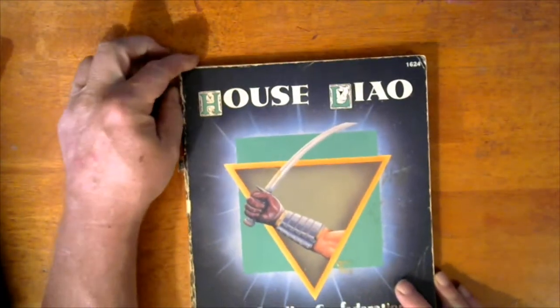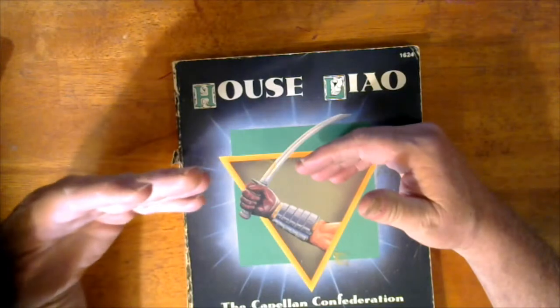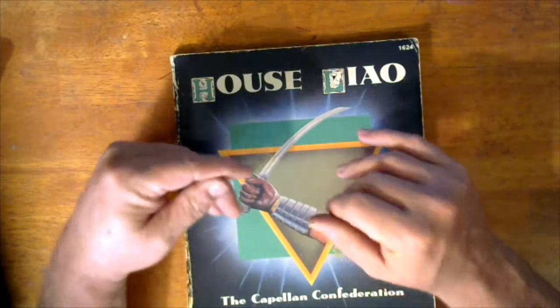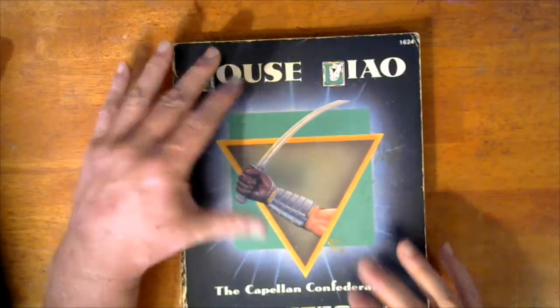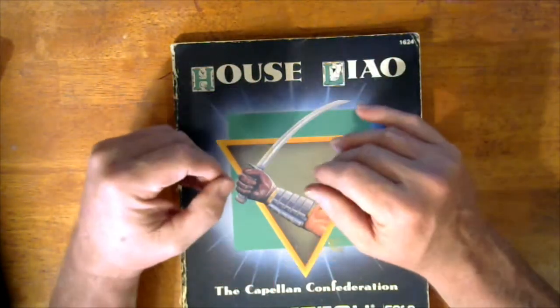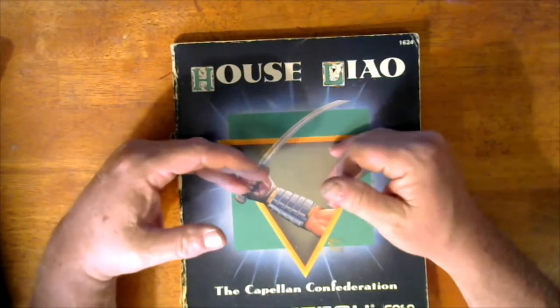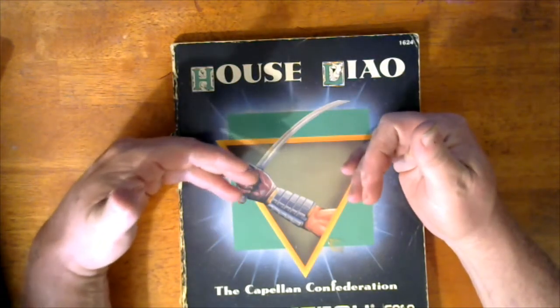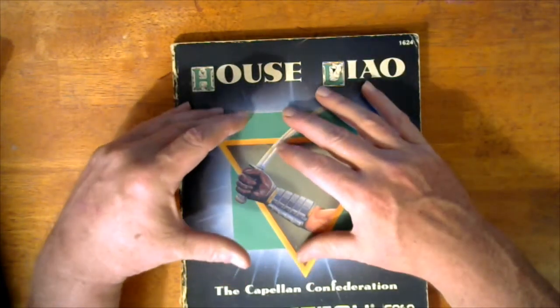This is one of the five great houses of the Inner Sphere. Whether you're playing the tabletop game BattleTech or the role-playing game MechWarrior, to really get an in-depth feel and vibe and flavor of the individual houses, these are the books. House Liao is the smallest of the five successor states.